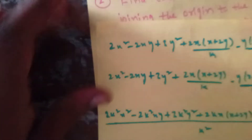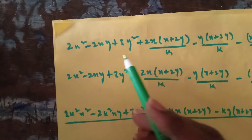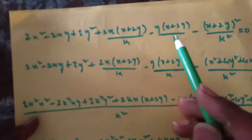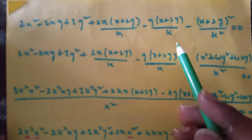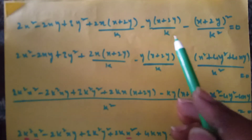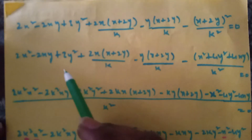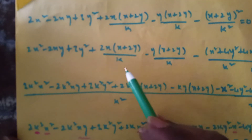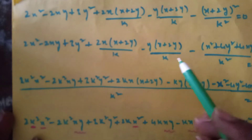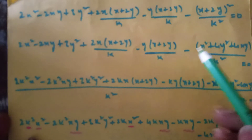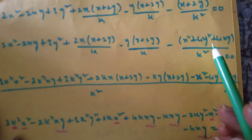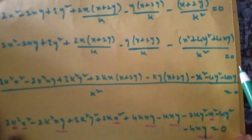Now we can write: 2x² - 2xy + 3y² + 2x(x + 2y)/k - y(x + 2y)/k - (x + 2y)²/k². Then expand using the (a + b)² formula. We get: x² + 4y² + 4xy all over k² = 0.